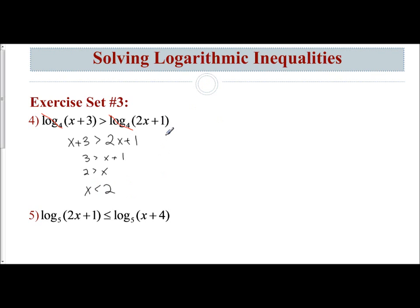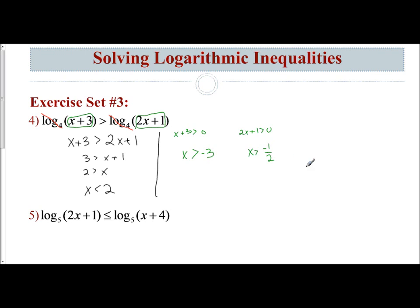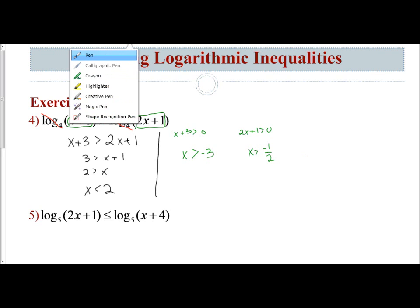I have to take into consideration my boundaries. Your boundaries are where the expression that you're taking the log of is greater than 0. So x plus 3 is greater than 0, meaning x is greater than negative 3. However, we also have another expression we're taking the log of — 2x plus 1. So 2x plus 1 is greater than 0, which means subtract 1 gives negative 1, then divide by 2: x is greater than negative 1 half. Now we have to compare these on our number line.